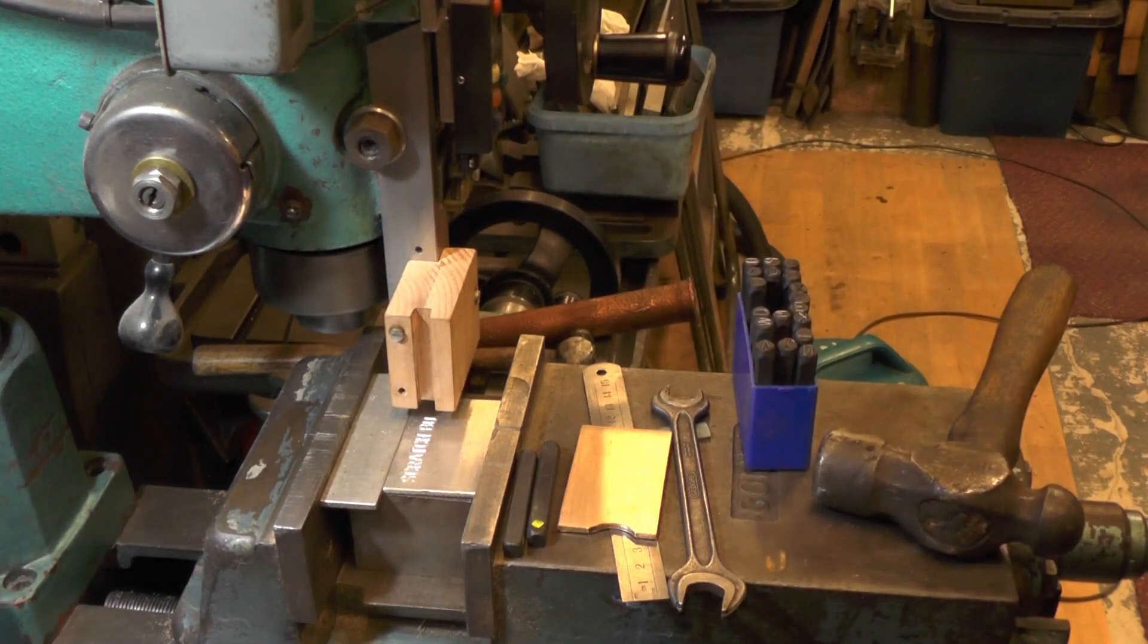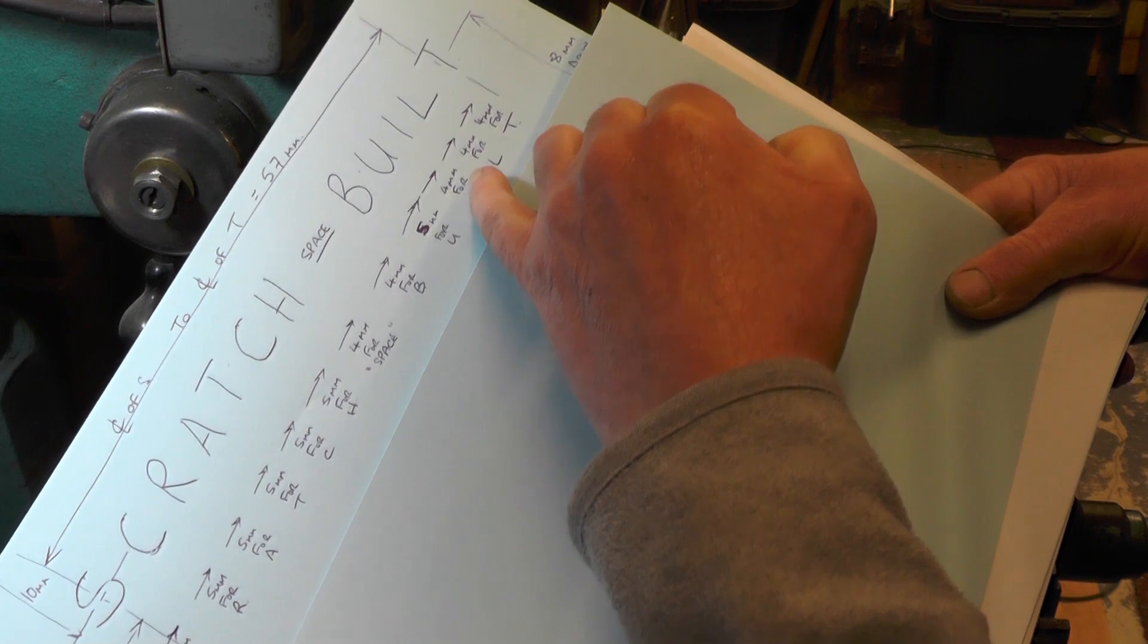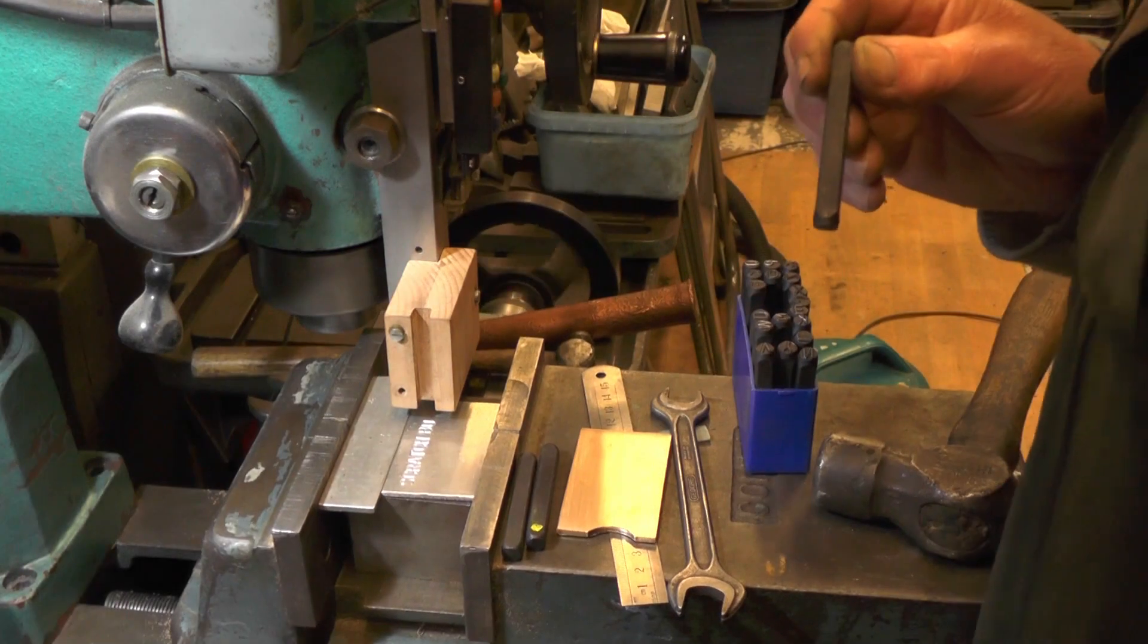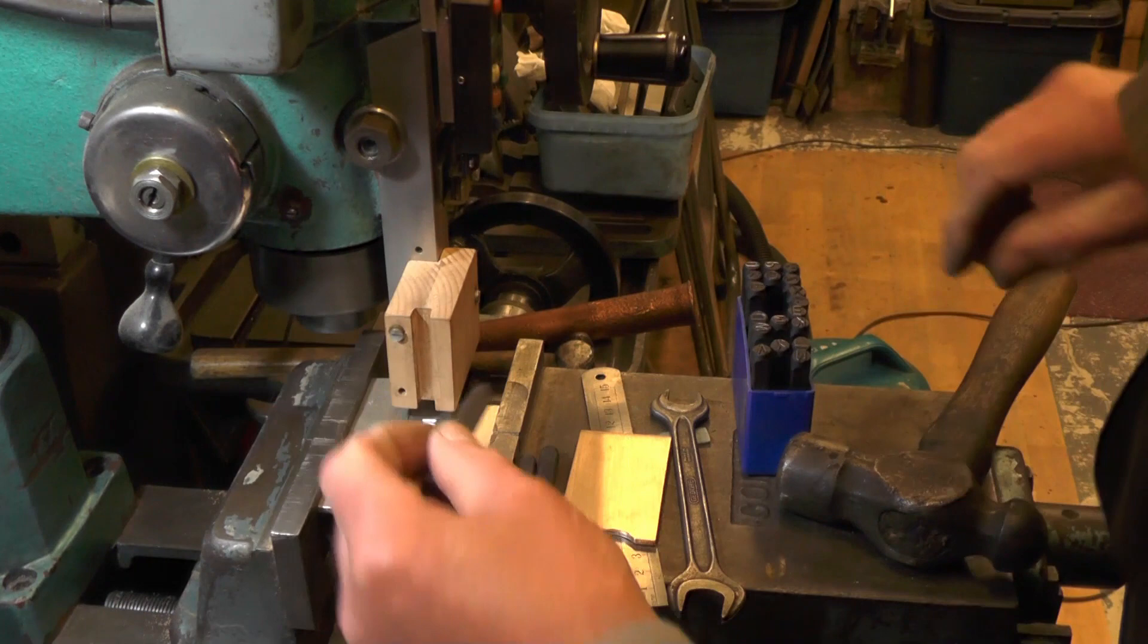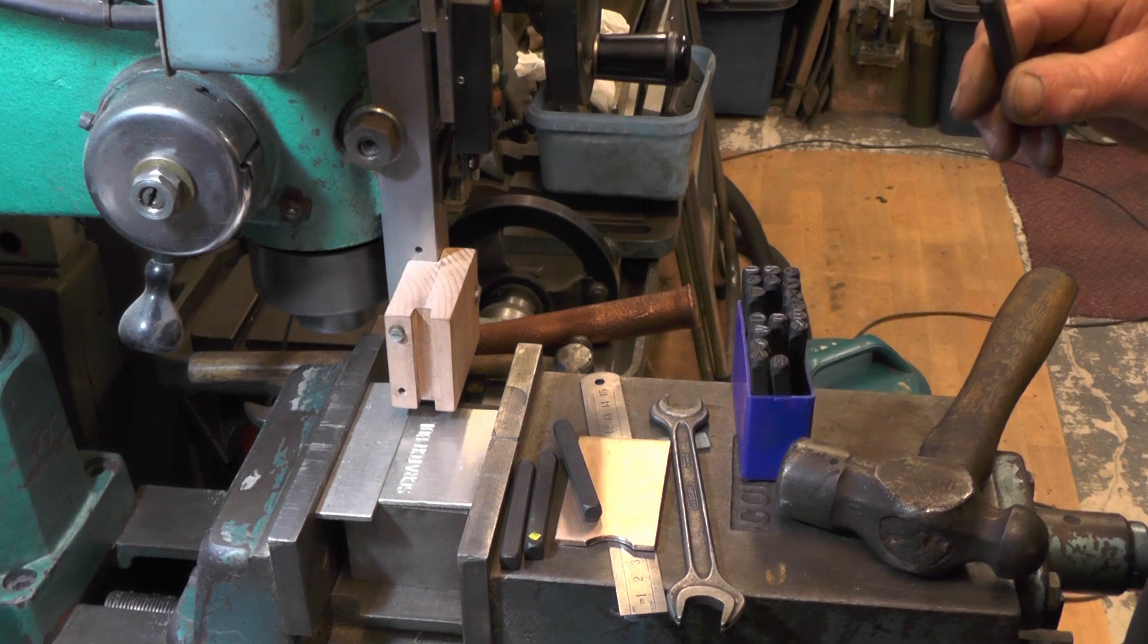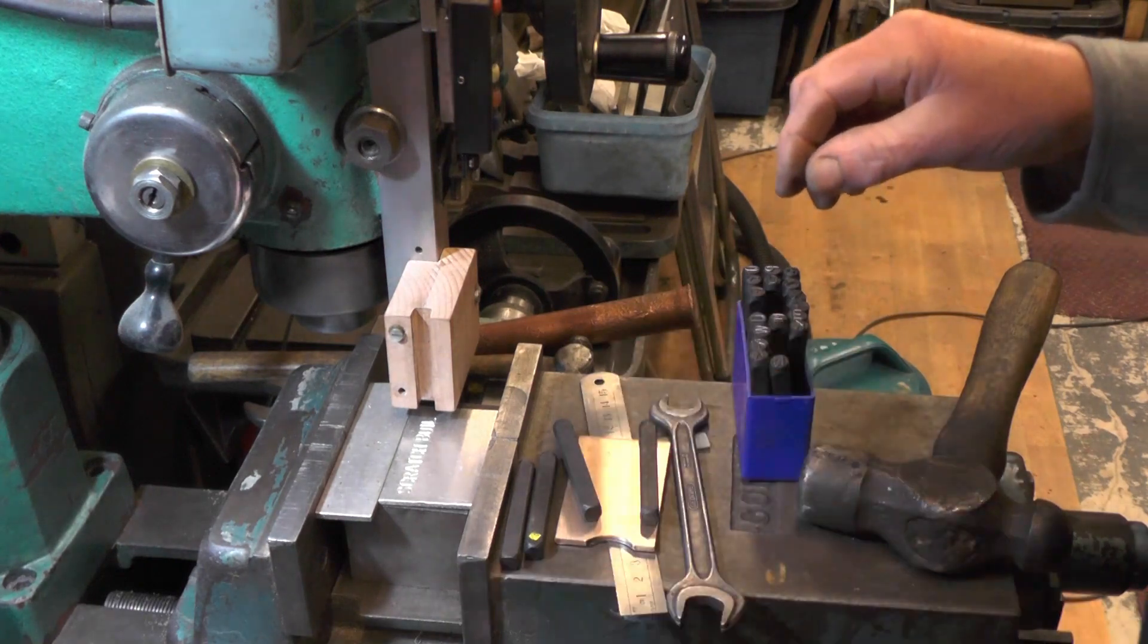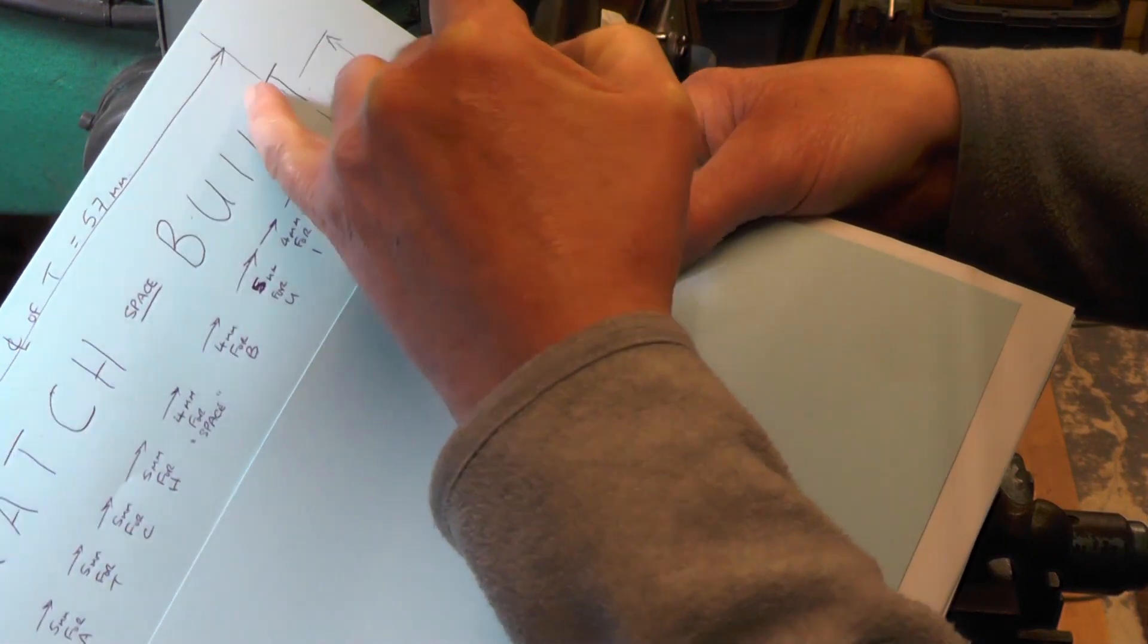Now I've come to a letter I, so instead of going the 5mm, I'll only be moving over 4mm for the I. Then from the I to the L, another 4mm. So that's the I on. I want an L now. So that's the L done.